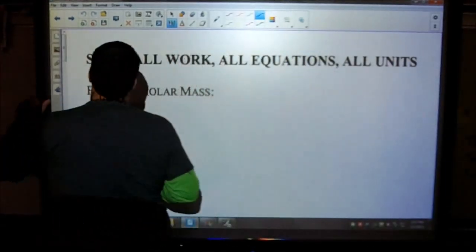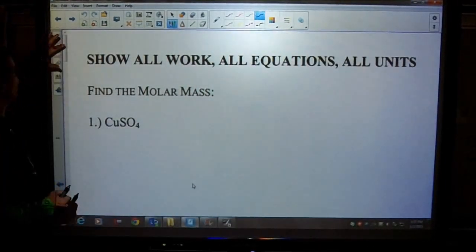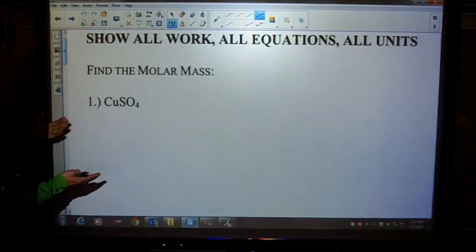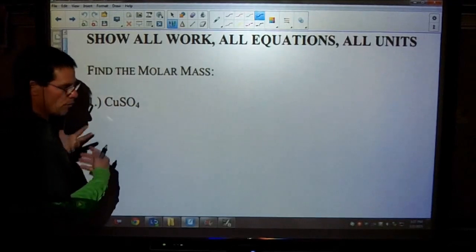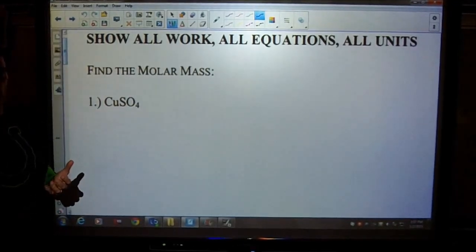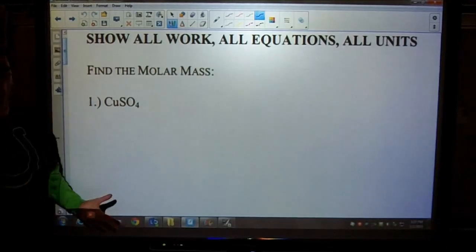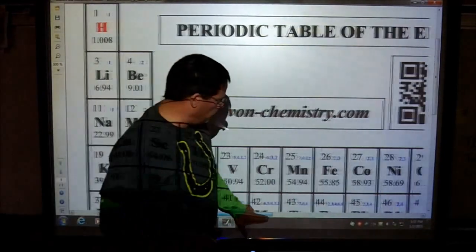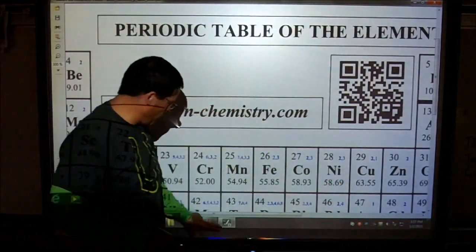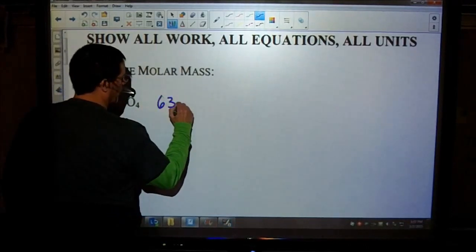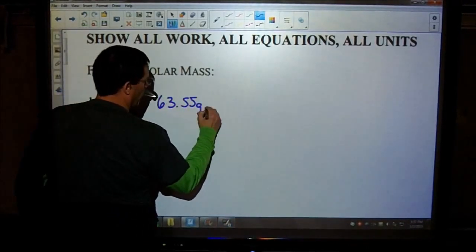Looking at number one, this is very similar to the type of problem that we had the last time, where you just simply find the molar mass of the compound. You'll do this in every one of the problems, or most of the questions. So let's get right to it. Copper has a molar mass of 63.55. So we have one copper, 63.55 grams per mole.